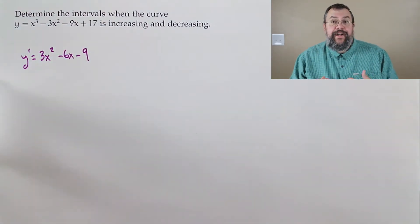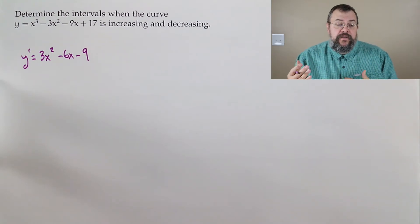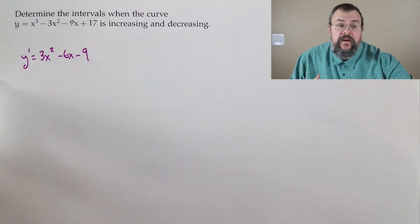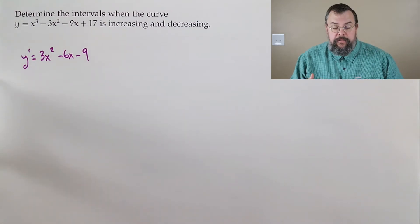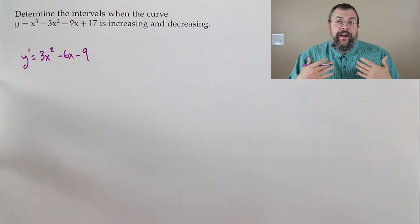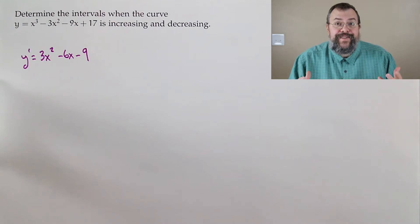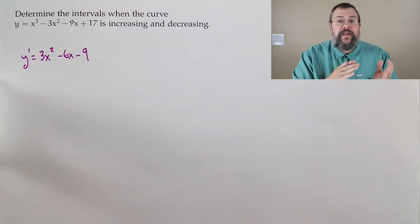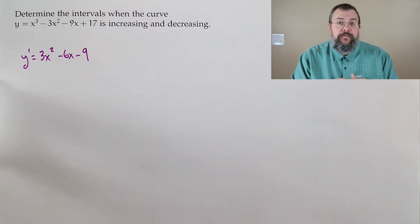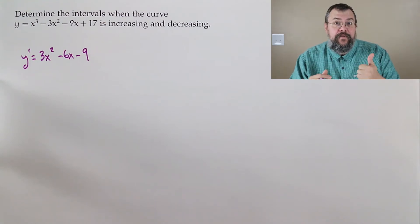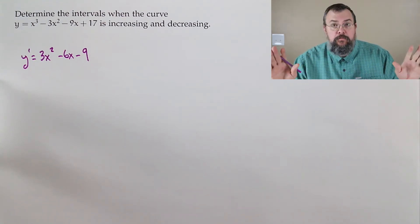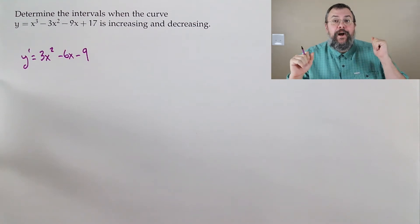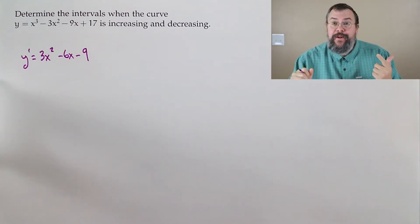We need to figure out when this derivative is positive and when it is negative, because that's going to give us our information. To do that, we want to figure out where the critical points are, because that's where we might change behavior from one form to another. Which means we ask: is this derivative ever undefined? Nope. Good to go.